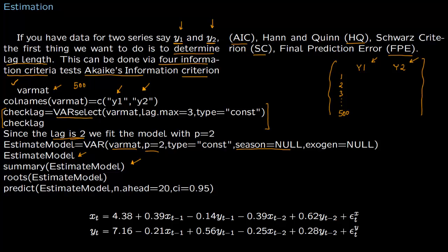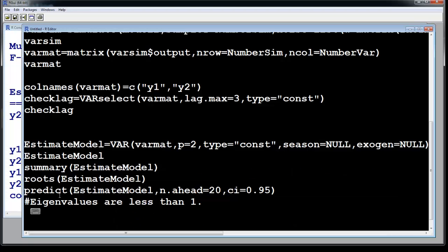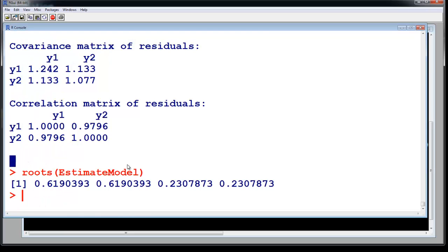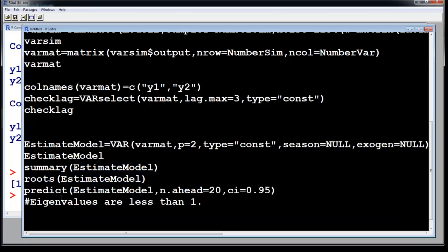Now we do the roots. The roots we expect to be less than one, otherwise this entire thing will blow up. Let us do the roots. Roots are less than one. These are not roots essentially, these are eigenvalues which are less than one. Roots we expect the modulus of roots to be greater than one. So these are eigenvalues and these are less than one, that means the model is stable and that you can see in prediction.